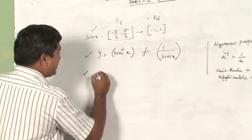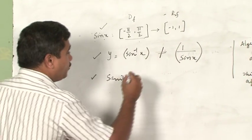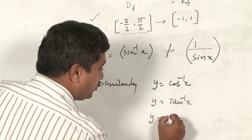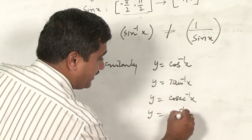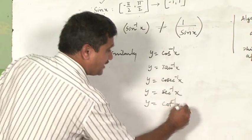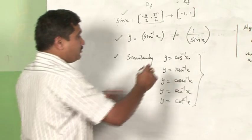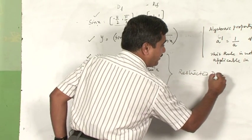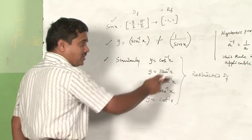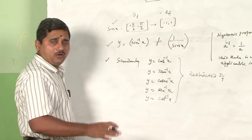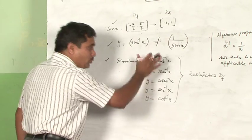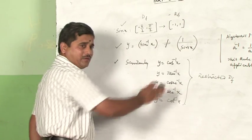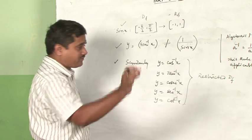Similarly, we can define y = cos⁻¹x, y = tan⁻¹x, y = cosec⁻¹x, y = cot⁻¹x as inverse trigonometric functions. All these functions have restricted domains. The restriction on the domain is required to make all trigonometric functions one-to-one and onto. If you do not restrict the domain, the function cannot be one-to-one and onto, and therefore cannot be invertible. One-to-one and onto is a mandatory condition for invertibility.